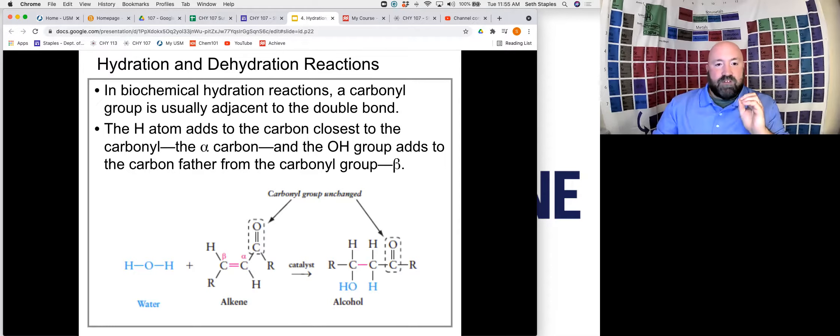What is important for us to know is that the H atom will actually add to the carbon closest to the carbonyl. And the OH is going to add to the carbon closest to the carbonyl. We call that the alpha carbon. So the carbon that is closest to our carbonyl is called the alpha carbon, and the carbon then one away from that is the beta. That beta carbon is where the alcohol is going to form.